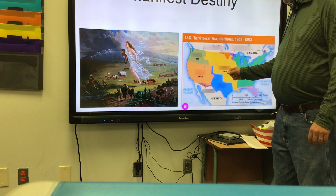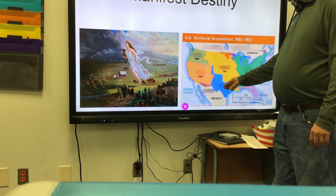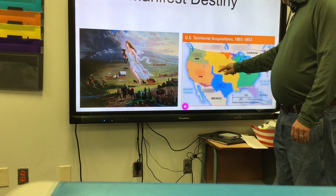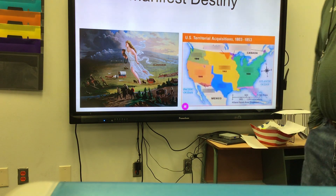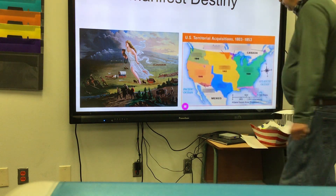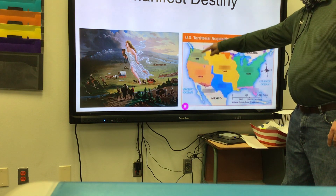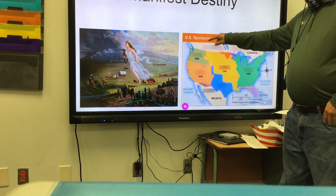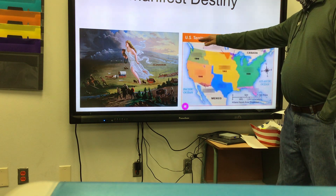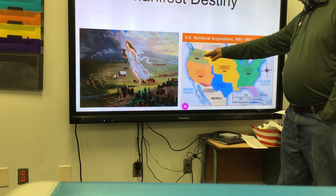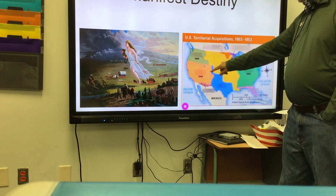Texas gets annexed in 1845. We fight a war with Mexico, and as a result we get what's called the Mexican Cession — the big chunk of orange: California, New Mexico, Arizona, Utah, and Colorado are all granted to the US. This happened in 1848. In 1844 there was talk of going to war with England over Oregon, but we negotiated the Oregon Compromise, setting a straight border at the 49th parallel — the US gets everything south of it, England gets everything north.